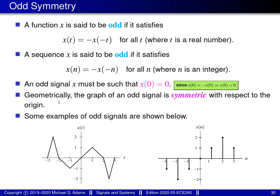In terms of the geometrical interpretation of odd symmetry, the graph of a signal with odd symmetry is symmetric with respect to the origin. Essentially there are two mirroring operations: to get the right half of the graph from the left half, you first mirror about the vertical axis and then mirror again about the horizontal axis. On the bottom left we have an example of an odd symmetric function, and on the bottom right an odd symmetric sequence, where the left half is generated from the right half by these two mirroring operations.